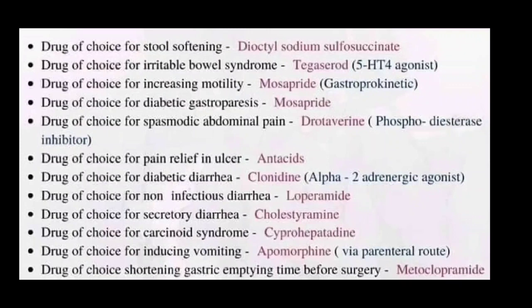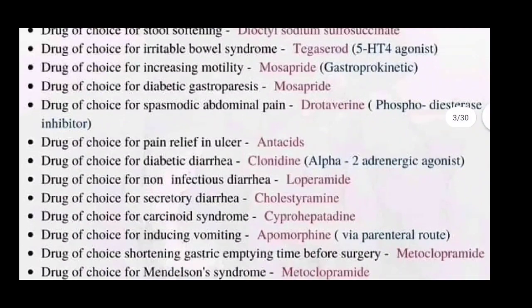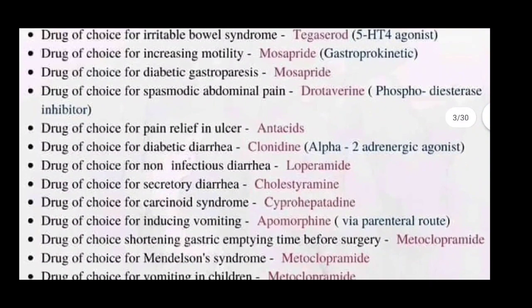Drugs of choice for irritable bowel syndrome is tegaserod, which is a 5-HT4 agonist. Drugs of choice for increased motility is mosapride, which is a gastroprokinetic agent. Drugs of choice for diabetic gastroparesis is also mosapride.